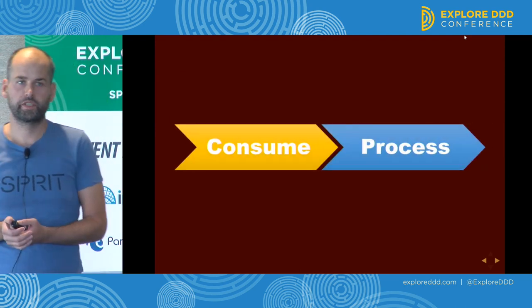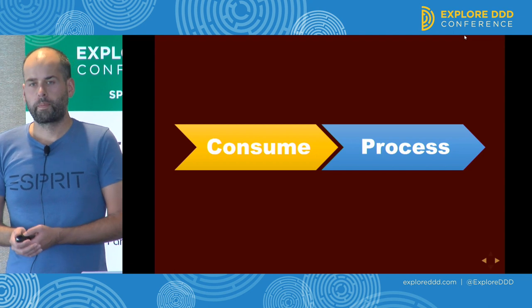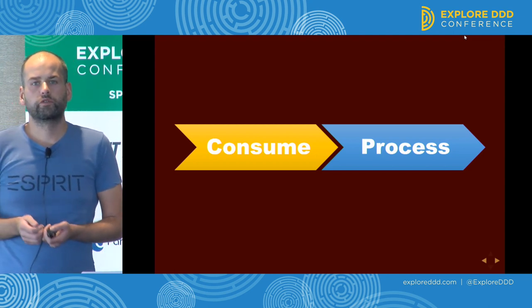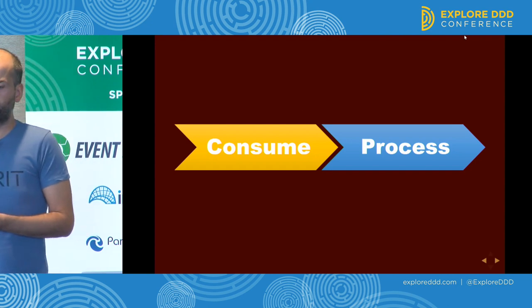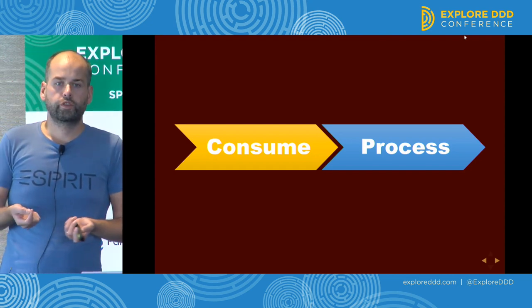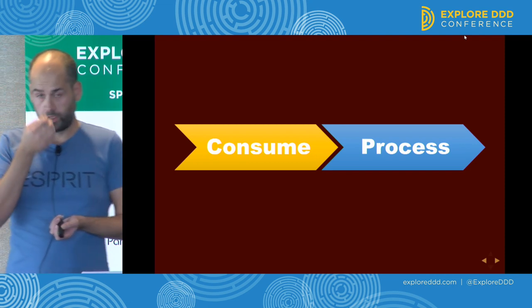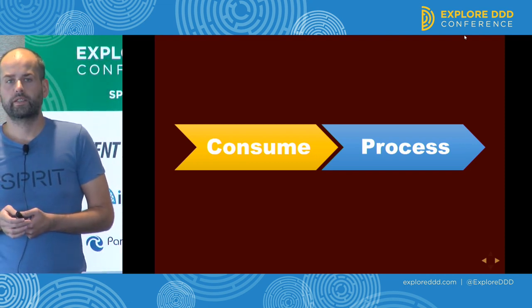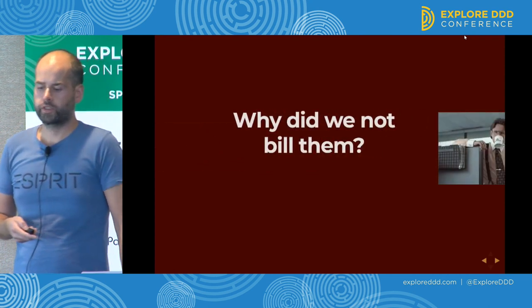They started processing their messages with their message broker. The processing of a message consisted of two steps: first, you take a message and consume it, and then you process it. Most message brokers support this mode of operation. The process is: you take the message, remove it from the queue, and process it.